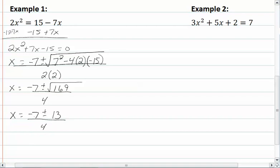So we have negative 7 plus 13 which will give us 6 fourths and negative 7 minus 13 which would give us negative 20 fourths. So that means x equals 3 halves and negative 5.